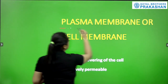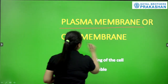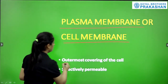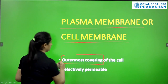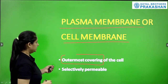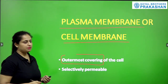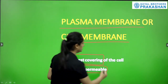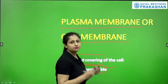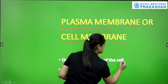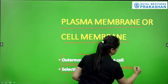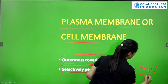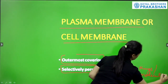The plasma membrane or cell membrane forms the outermost covering of the cell. Plasma membrane or cell membrane is selectively permeable. This means the membrane allows only certain things — selected molecules or substances — to pass through it.